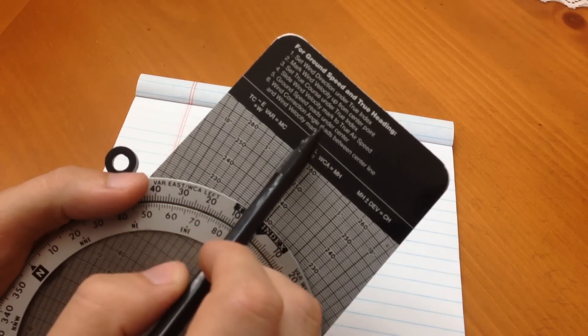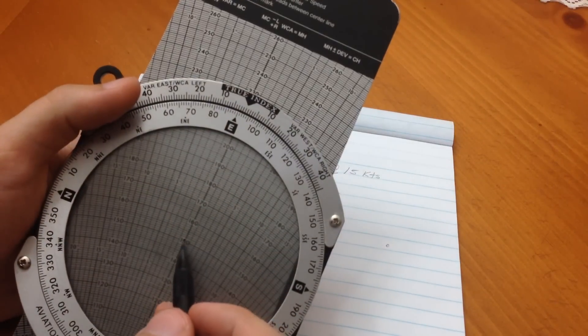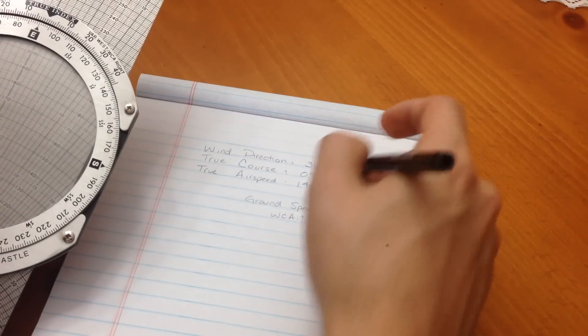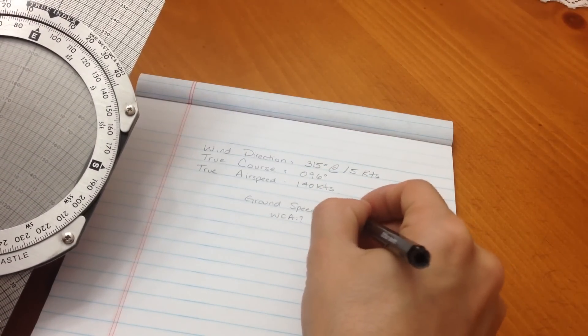Our ground speed is going to read under the center. So, the center here is reading our ground speed. So, our ground speed actually is nice. It's 150 knots. So, we already found our ground speed, 150 knots.